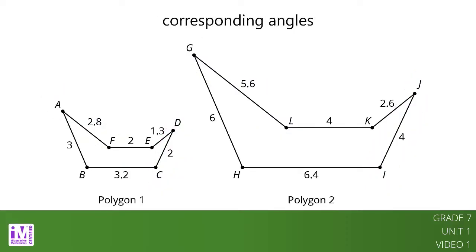Each angle in Polygon 1 also has a corresponding angle in Polygon 2. For example, angle D-E-F corresponds to angle J-K-L.